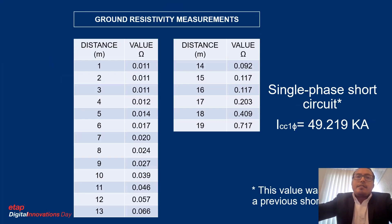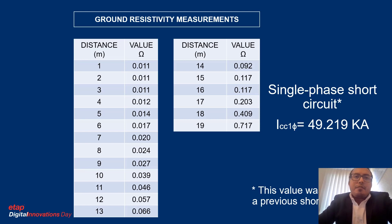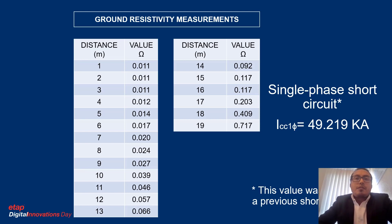These are the values obtained after the measurement, following the current resistivity measurements. We have 19 different measurement points and the single-phase short circuit level, which was obtained from a previous short circuit study. After the calculations, we were able to obtain very specific values about the current resistivity measurements in the plant.